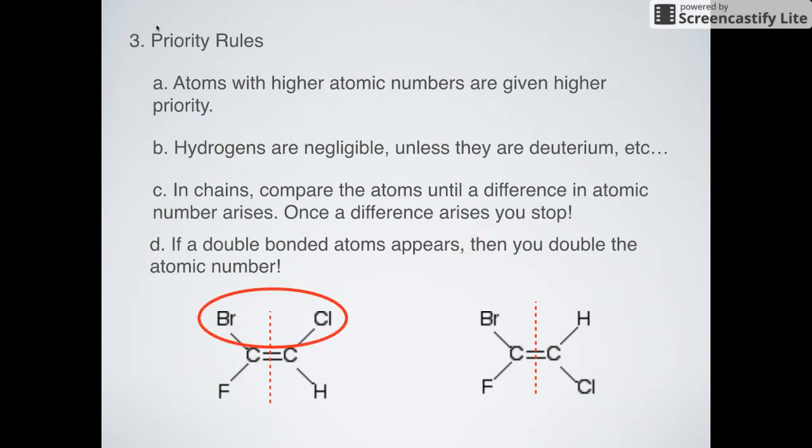Let's talk about what that would look like. Bromine and chlorine are way heavier. Bromine is heavier, chlorine is lighter, but still, these are the two heaviest atoms. This would be our Z isomer because they are on the same side. This would be our E isomer because bromine and chlorine are the heaviest things and they are on opposite sides.